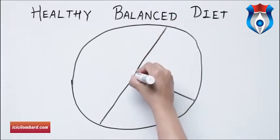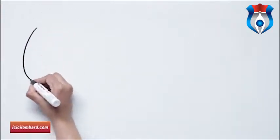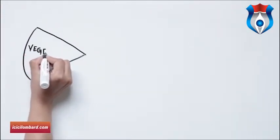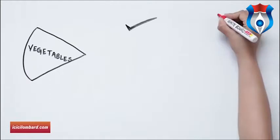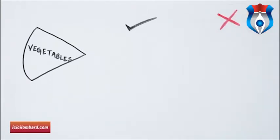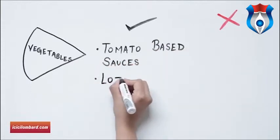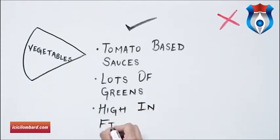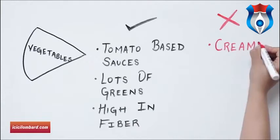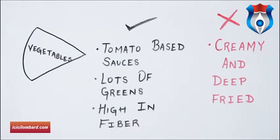Vegetables, dairy products and cereals each contribute 27% to a balanced diet. For vegetables, try to avoid anything creamy or deep-fried to reduce fat. Choose dishes with tomato-based sauces such as tandoori and madrasi. Also add greens such as palak and lentils as side vegetables as they are high in fiber.